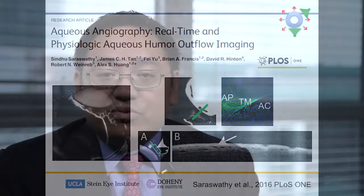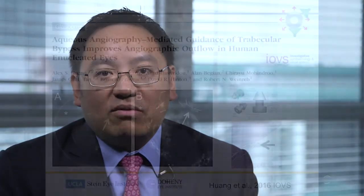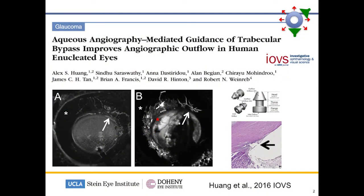To bring this to the clinic and to patients, we performed aqueous angiography-mediated guidance of trabecular bypass. We started with postmortem human eyes and did the angiography with indocyanine green, identifying regions with and without flow. You can see on the left eye with the asterisk where there isn't much flow. We then opened the eye, performed a trabecular bypass surgery, closed the eye, and asked: can low-flow regions be rescued? What you can see is that the initial low-flow region could now turn bright. Histology demonstrates proper placement.